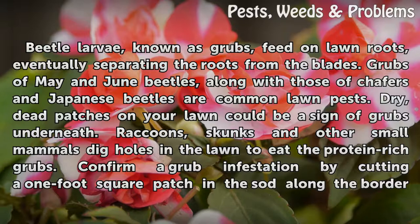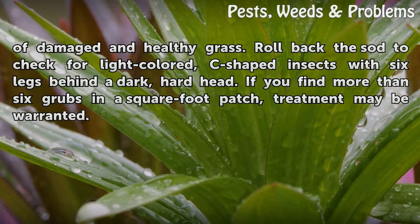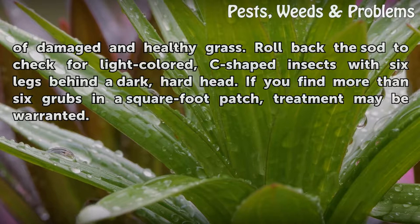Raccoons, skunks and other small mammals dig holes in the lawn to eat the protein-rich grubs. Confirm a grub infestation by cutting a one-foot square patch in the sod along the border of damaged and healthy grass. Roll back the sod to check for light-colored, C-shaped insects with six legs behind a dark, hard head. If you find more than six grubs in a square foot patch, treatment may be warranted.